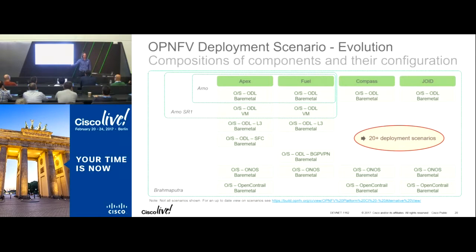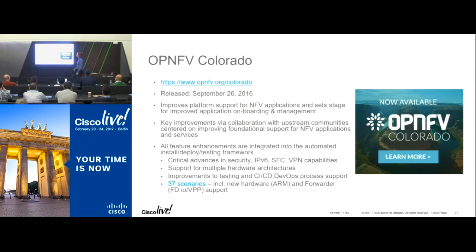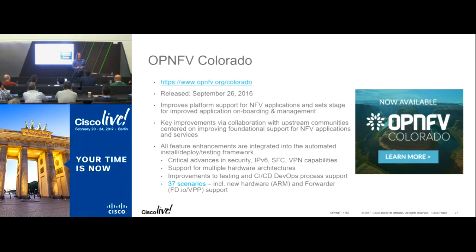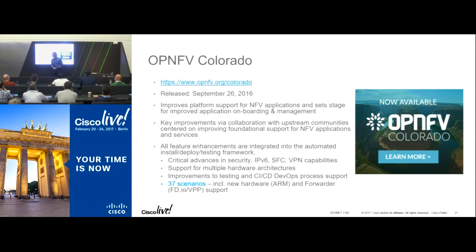Colorado, the next step, was released in September 2016 — the last release we've done. We went from two scenarios initially, to more than 20 in Brahmaputra, to 37 scenarios in Colorado. We added ARM support alongside x86 architecture. And Colorado introduced the first trace of FD.io VPP — this very fast forwarder — making it the first time you could really run virtual network functions for real.